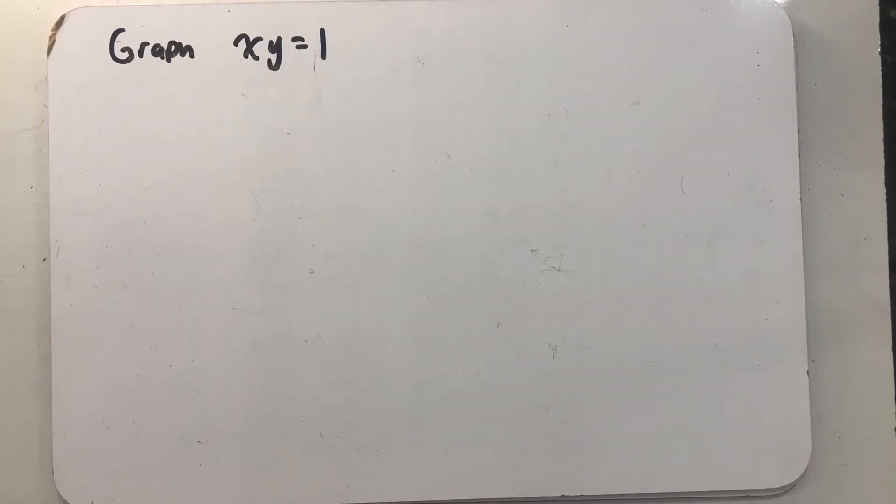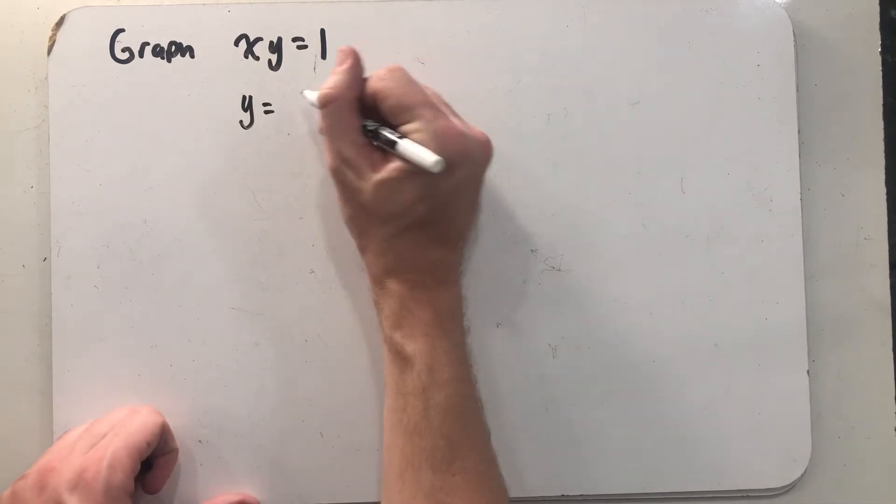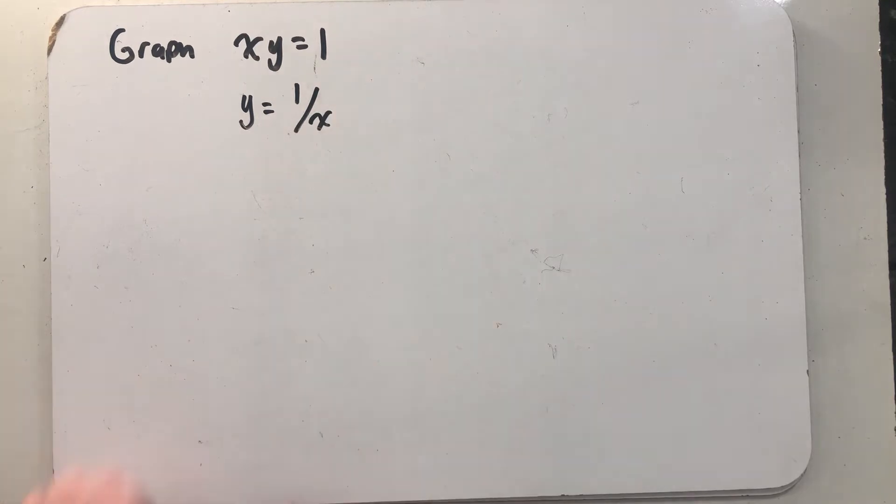We've been asked to graph x times y equals one. This doesn't even seem like a problem that belongs in the lessons on conic sections. When I look at this, what I immediately want to do is rewrite it as y equals one over x.